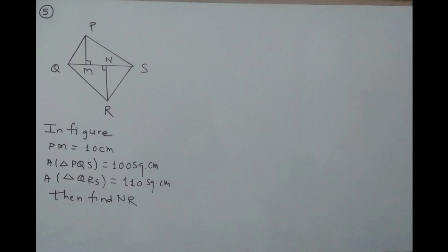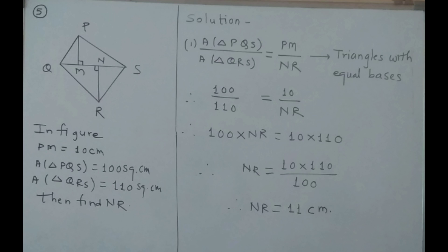Let us start with the solution. Area of triangle PQS divided by area of triangle QRS is equal to PM upon NR. Reason: triangles with equal bases — if triangles have equal bases, ratio of their areas is equal to ratio of their corresponding heights. Substituting the values: 100 upon 110 is equal to 10 upon NR. By cross multiplication, 100 into NR is equal to 10 into 110. Therefore NR is equal to 10 into 110 upon 100. Final answer: NR is equal to 11 cm.